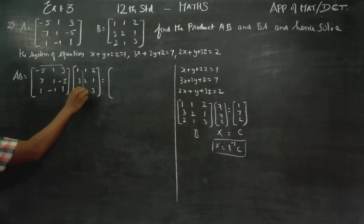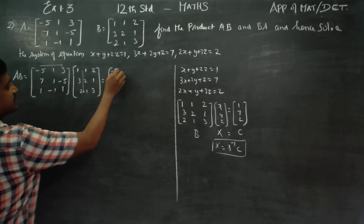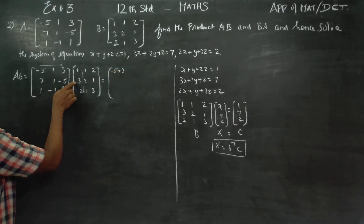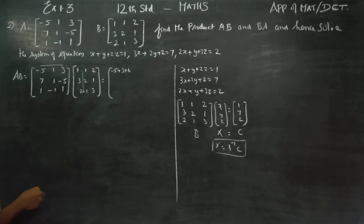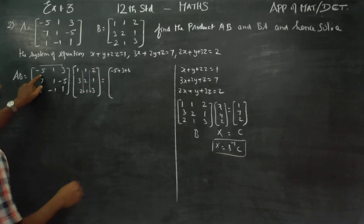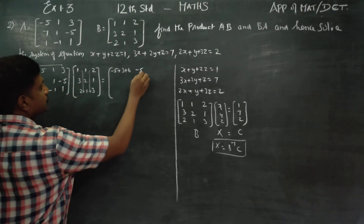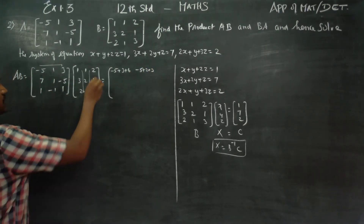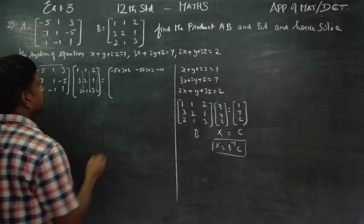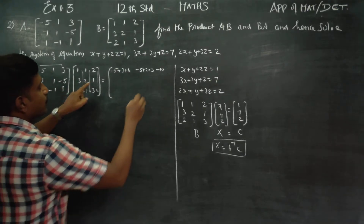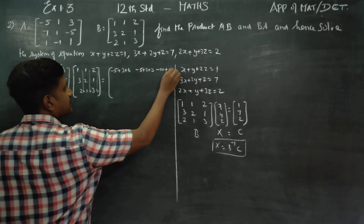Row into column. First row: (-5)(1) = -5, plus (1)(3) = 3, plus (3)(2) = 6. Second column: -5 into 1 is -5, 1 times 2 is 2, 1 times 3 is 3. Last row: -5 into 2 is -10, 1 times 1 is 1, 1 times 1 is 1, 3 times 3 is 9.